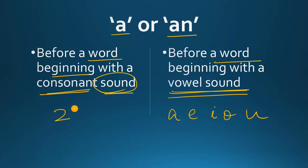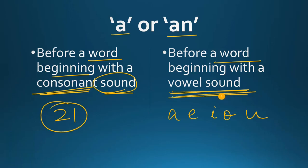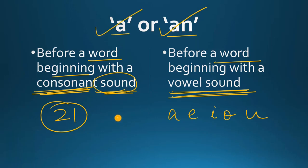इन पाँचों के इलावा 21 बाकी alphabets हैं, वो consonants हैं. Now, अगर कोई word start हो रहा है vowel sound से, तब आप उस word से पहले 'an' use करेंगे. If the word is starting with a consonant sound, irrespective of the alphabet — you have to see the sound — then you will use 'a' before that word. Now let us see some exceptions — कुछ ऐसे words हैं जो शुरू तो होते हैं vowel से, लेकिन उनका sound vowel वाला नहीं होता, इसलिए उनसे पहले 'a' use होता है.